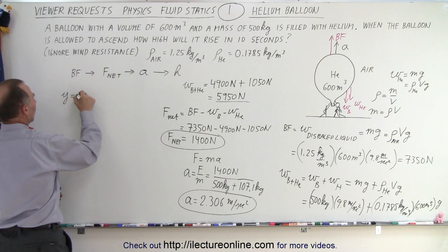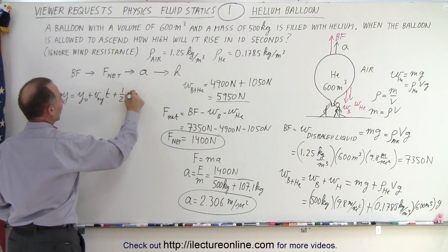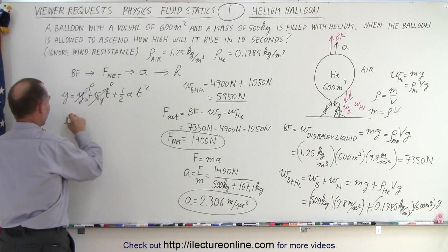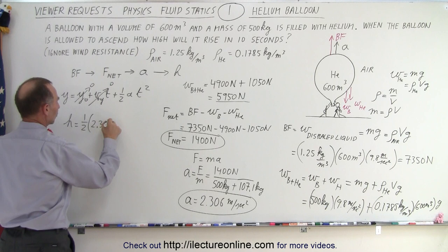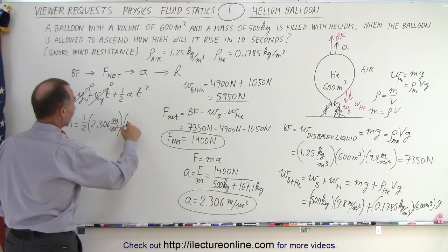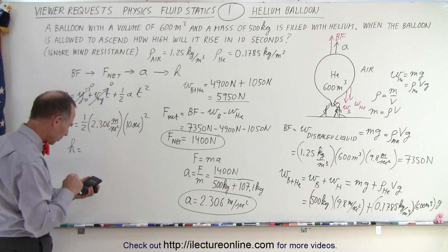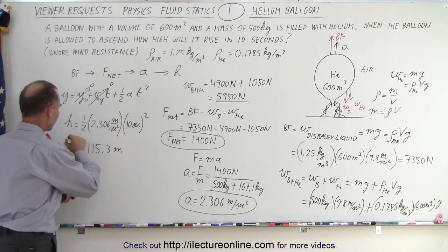Finally, the height. We know that y equals y-naught plus v-naught times t plus one-half times a times t squared. Since we start from zero height with zero initial velocity, the height is simply y equals one-half times acceleration times t squared. So height equals one-half times 2.306 meters per second squared times 10 seconds squared, which gives us a height of 115.3 meters.